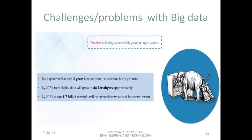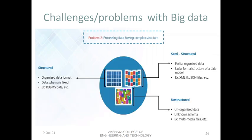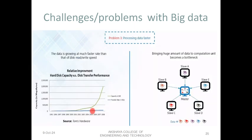Challenges of big data include: first, exponentially growing huge data sets that continuously get updated, making it impossible to fit everything into a single system or server. Second, processing data with complex structure — traditional RDBMS databases use table format, whereas big data is mostly semi-structured or unstructured, requiring a new processing mechanism. Third, processing data faster — since the volume of data is very large, when we need to extract information, we need to process it very fast.